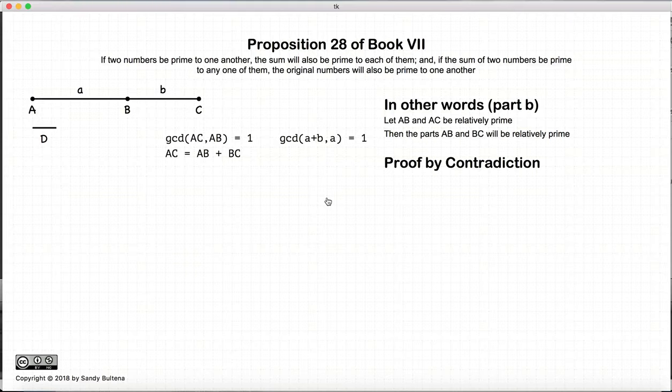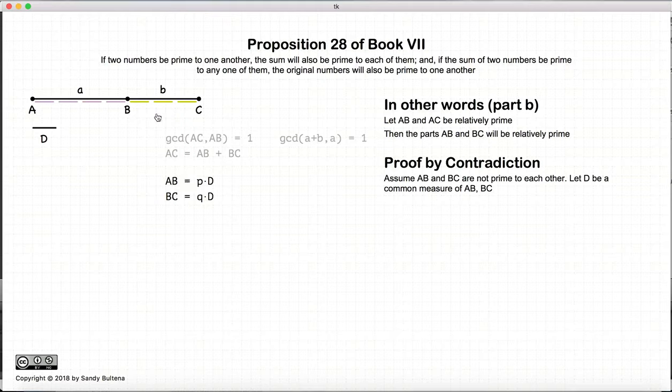So let's prove this, and again, we're going to use contradiction. So in this case, we're starting off by stating that AB and BC have a common measure, d, d not being equal to one, and if AB and BC have the common measure of d, and since AC is the sum of them all, you can see that AC is also measured by d.